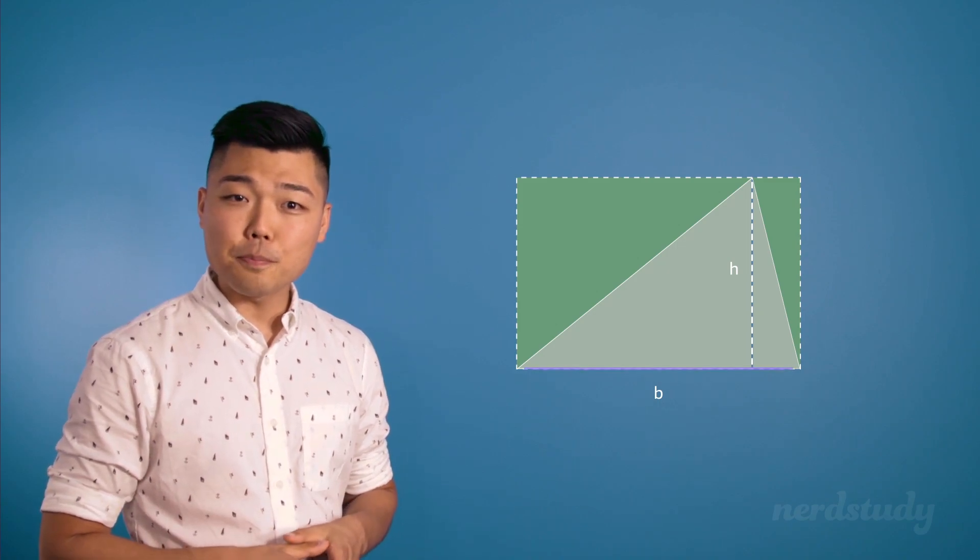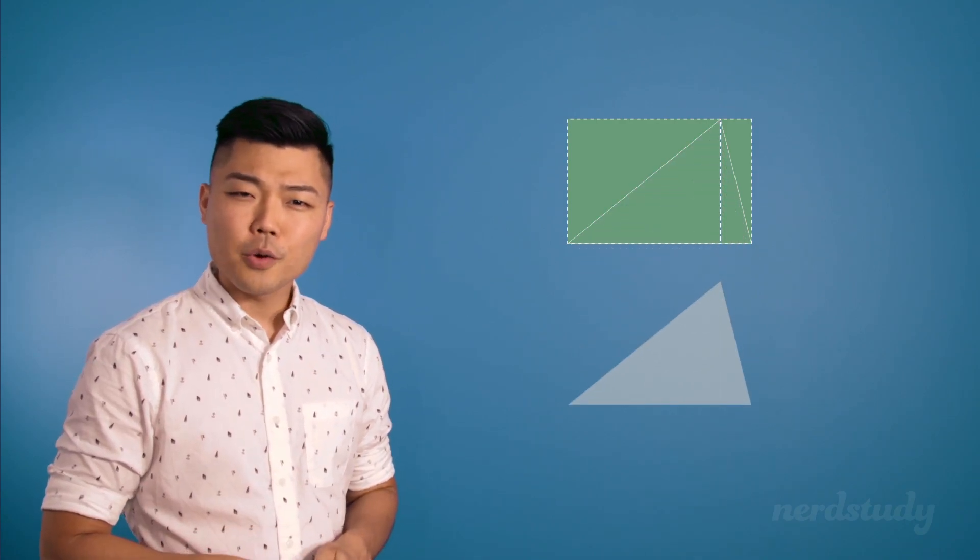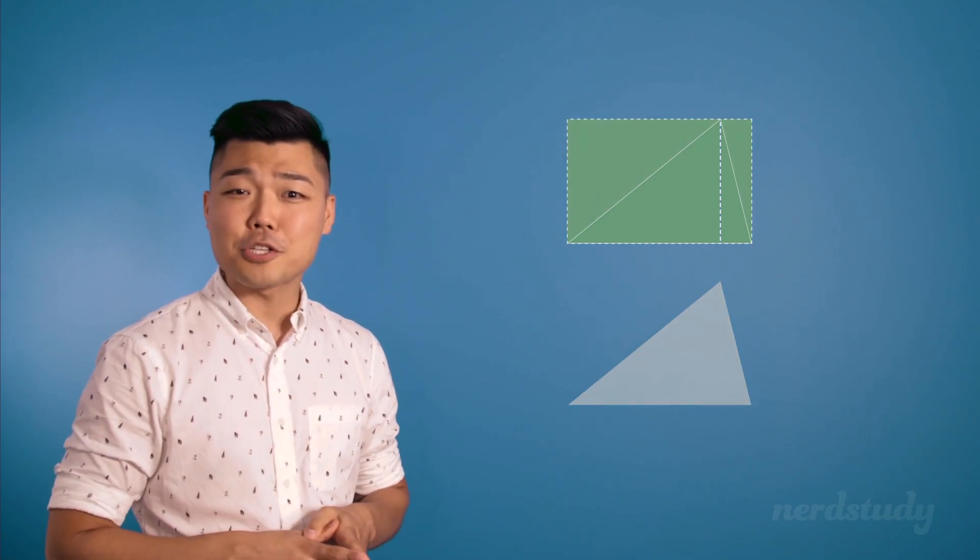So again, by the time you do base times height, you've calculated the rectangle that would be exactly double the area of the triangle in question, which is why we would do our divided by 2 in order to get exactly the area of the triangle only.